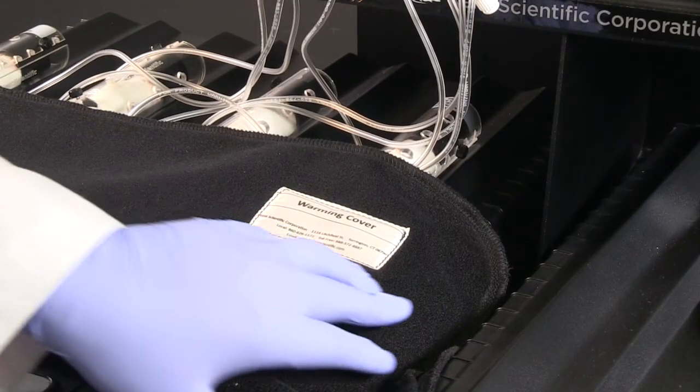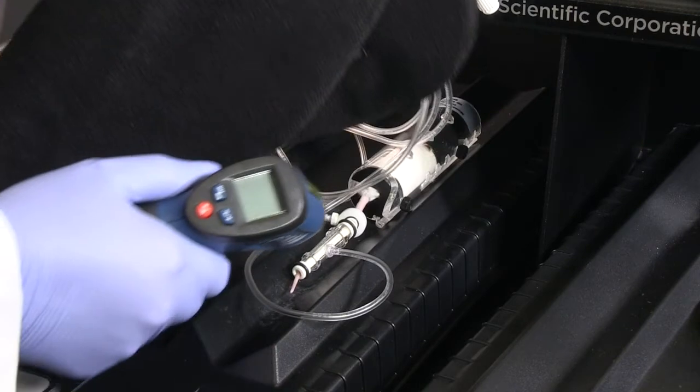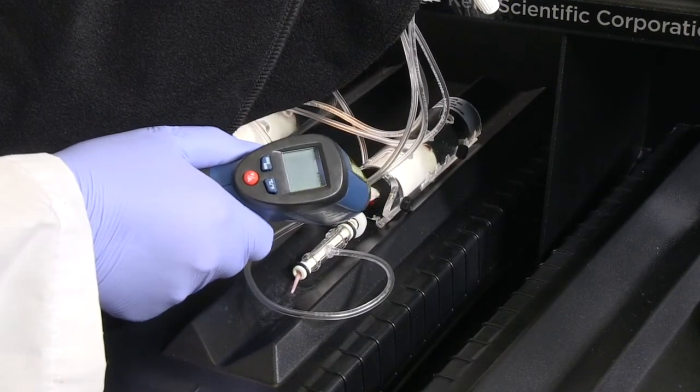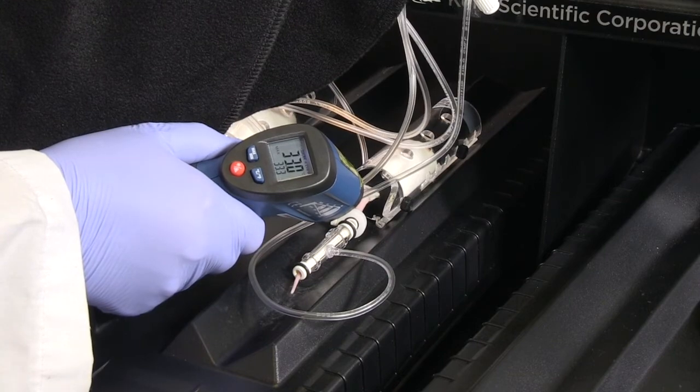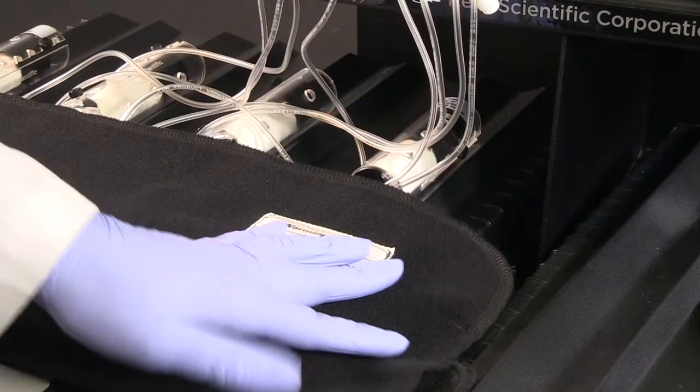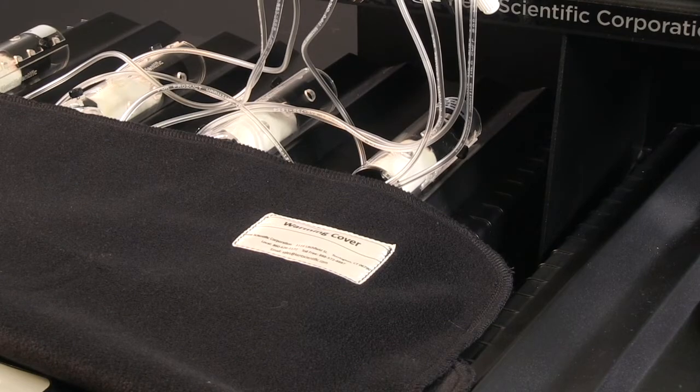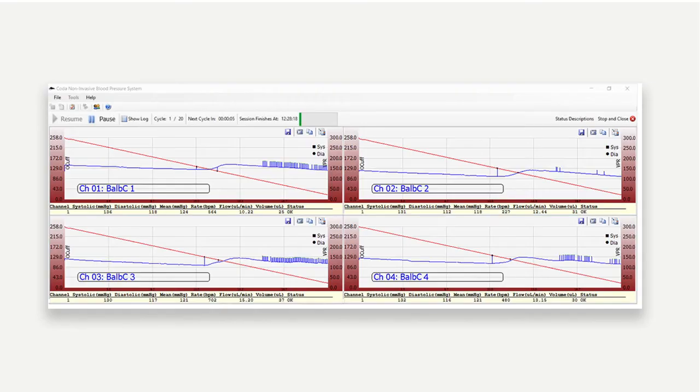Now that the software is set up, verify that your animals have sufficient tail blood flow by measuring their tail temperature. Point the far infrared thermometer at the base of the tail. The tail temperatures should measure at least 32 to 35 Celsius to ensure optimal conditions. Once the tail temperature is in range, you can begin measurements.